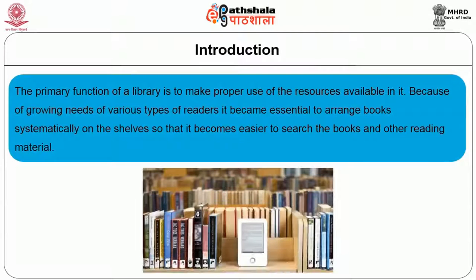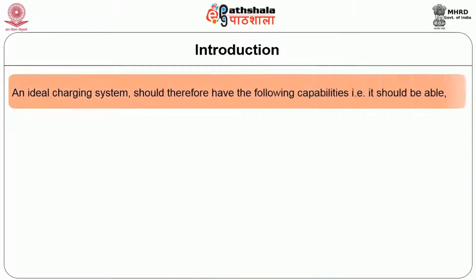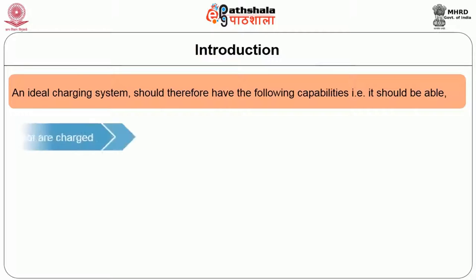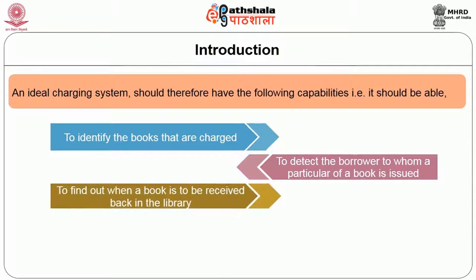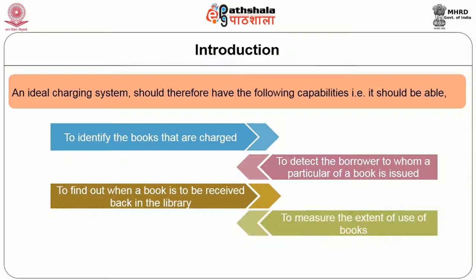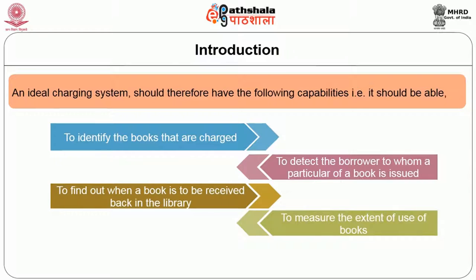The primary function of the library is to make proper use of resources available in it. Because of growing needs of various types of readers, it became essential to arrange books systematically on the shelves so that it becomes easier to search books and other reading material. An ideal charging system should be able to identify the books that are charged, detect the borrower to whom a particular book is issued, find out when the book is to be received back, and measure the extent of use of books and indicate the number of books circulated per day.